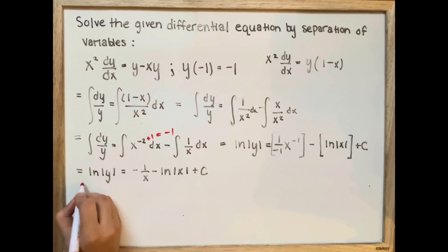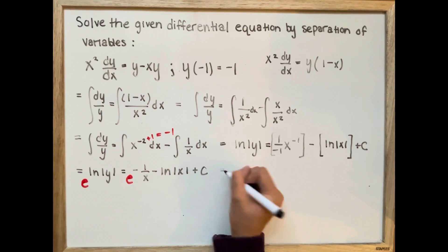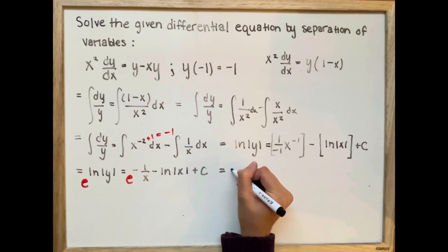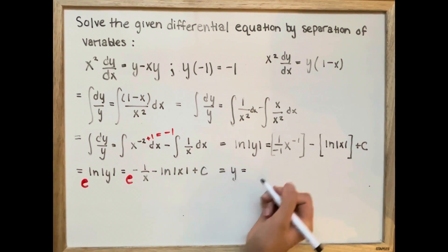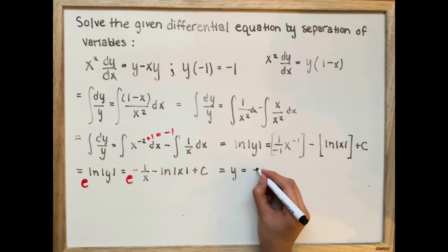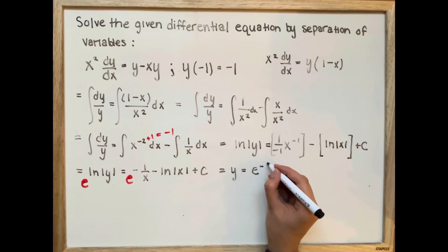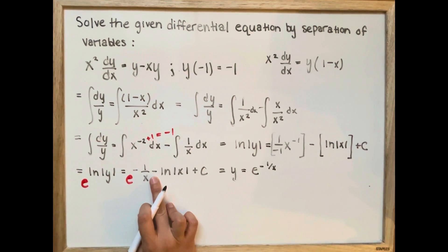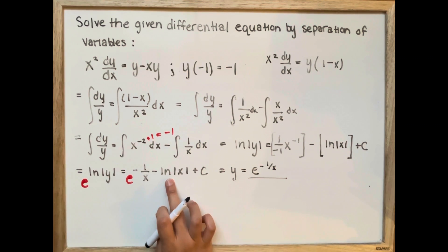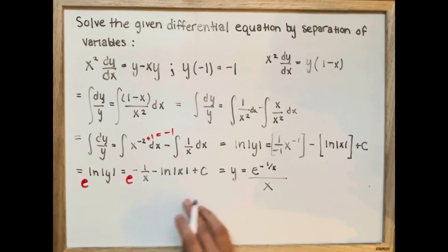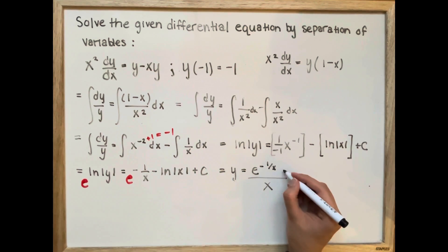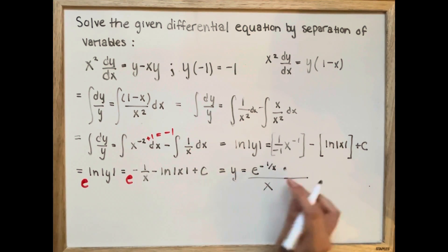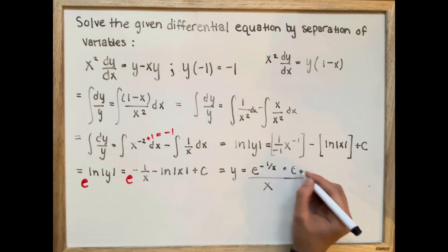Now we're going to take the exponential function of both sides. The e and the ln cancel out, leaving us with just y. On the right side, because of the subtraction, we can use exponential rules and divide. e to the power of ln x is just x, so we put x in the denominator. And e to the power of c, using exponential rules, we can just multiply it — so it's e to the c.